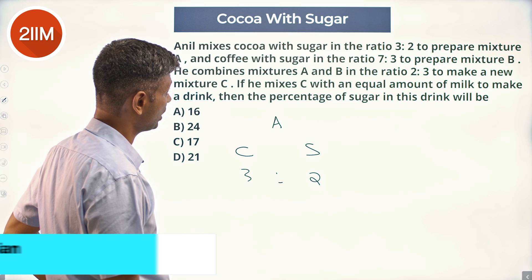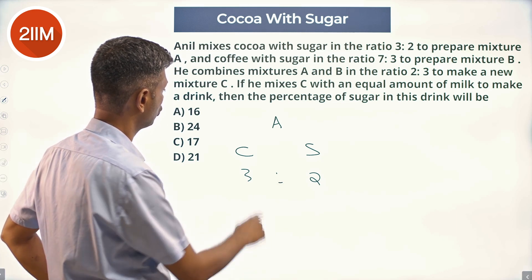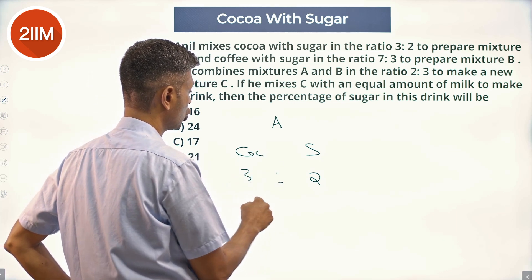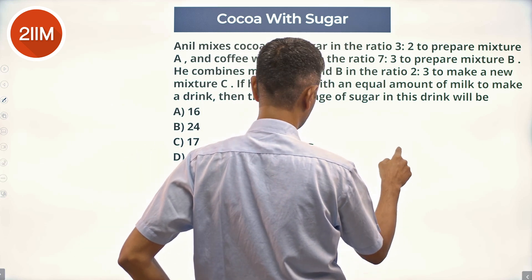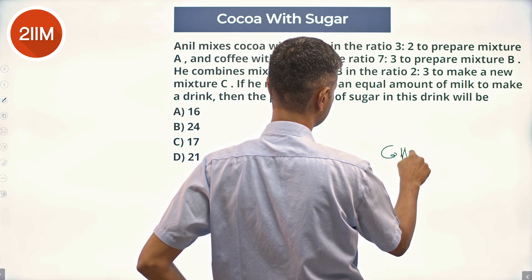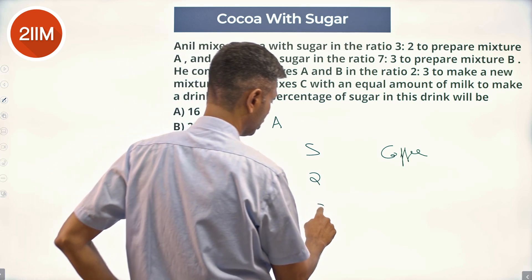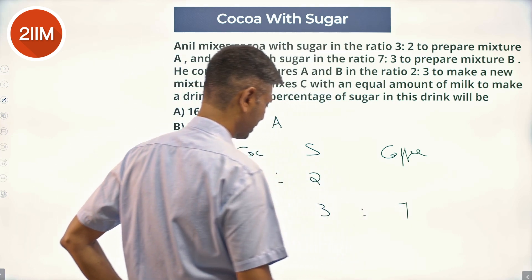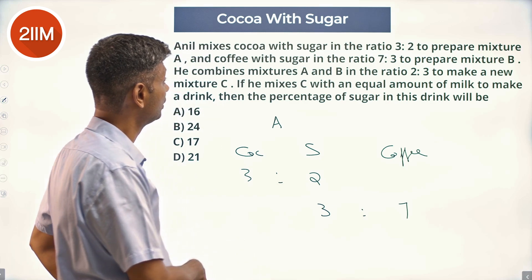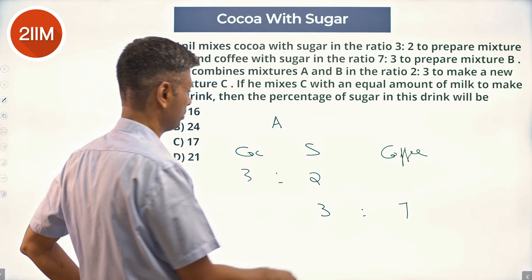And coffee with sugar in the ratio 7:3. This is cocoa and coffee with sugar. I'm going to say coffee with sugar in the ratio 7:3, so 3:7. I'm going to simplify this to prepare mixture B. This is mixture B.